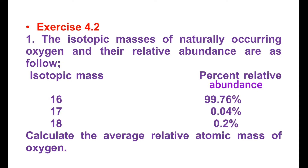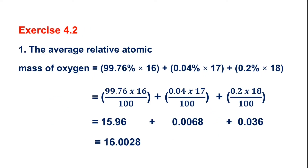The average related atomic mass of oxygen is calculated as: 16 × 99.76%, plus 17 × 0.04%, plus 18 × 0.20%. The result gives an average relative atomic mass of oxygen of 16.002.